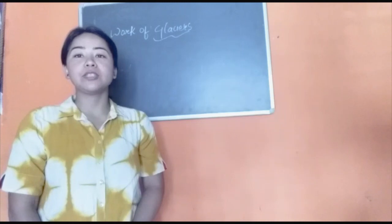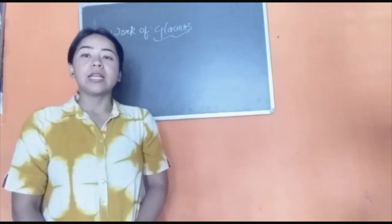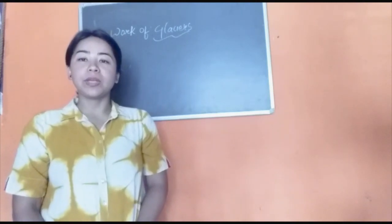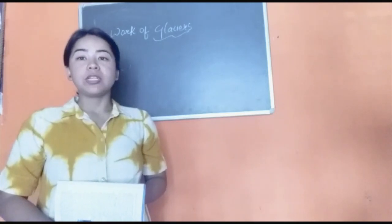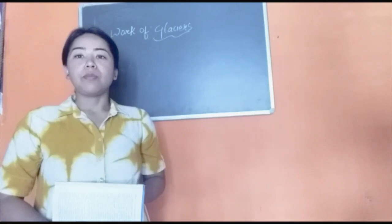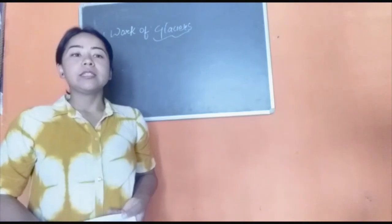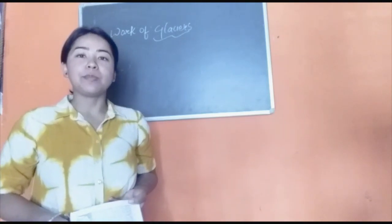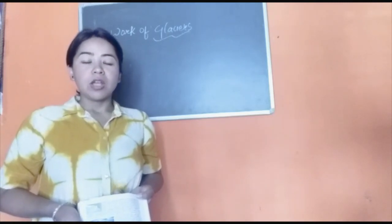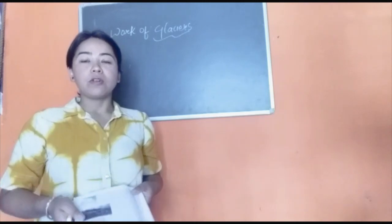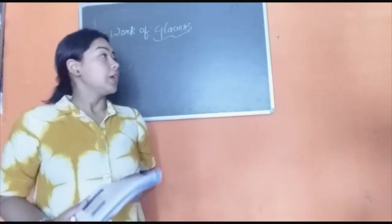Hello and welcome. In today's class we are going to learn about the work of glaciers. Like rivers and winds, glaciers have played an important role in shaping and formation of new landforms. Today we will see the landforms which glaciers have formed by their erosional and depositional work. Glaciers are large bodies of ice formed because of accumulation of snow over a period of time. When snow accumulates layer over layer it gets compacted and becomes a rigid body of ice.